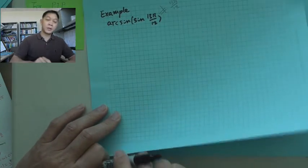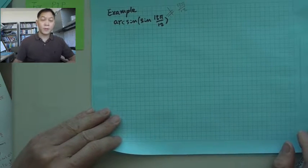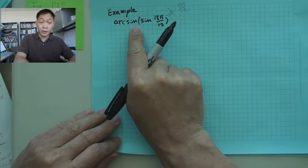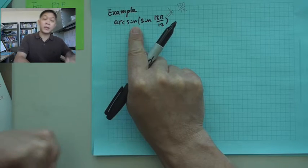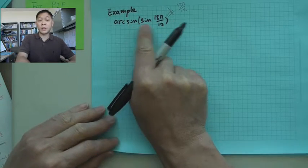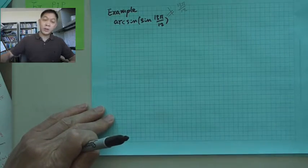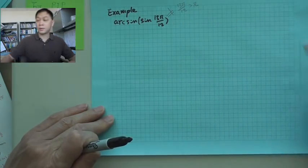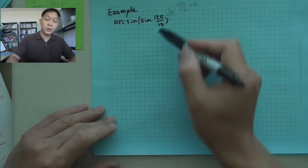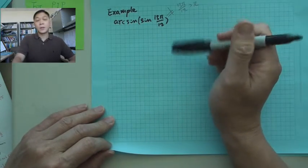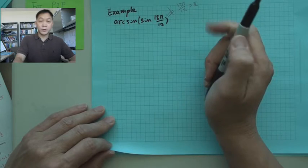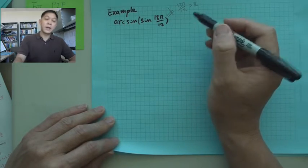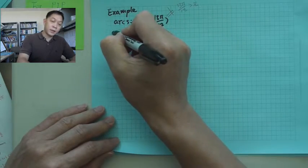The reason is arcsine, the output for arcsine, the range is between negative pi over 2 to the positive pi over 2, and apparently this one is greater than pi. The reason is this one was out of the range from negative pi over 2 to the positive pi over 2.